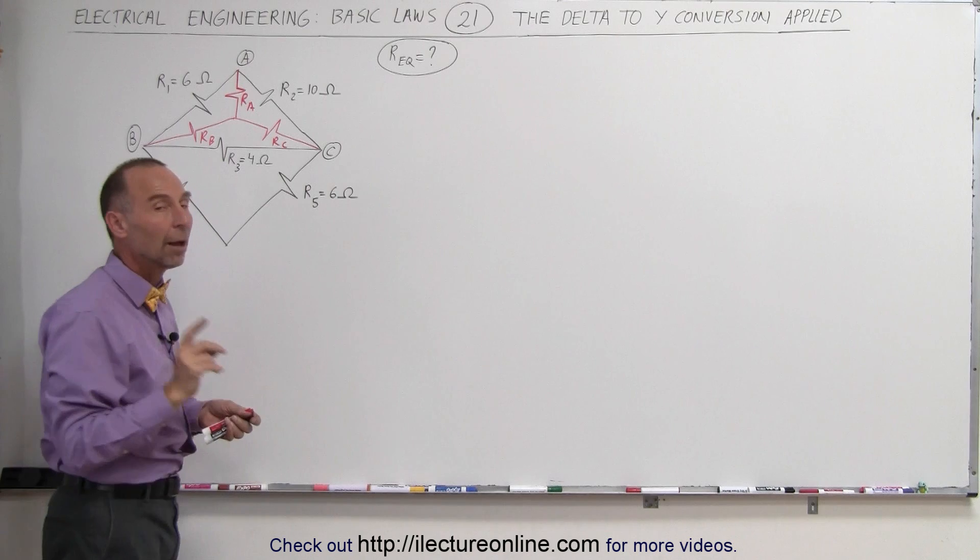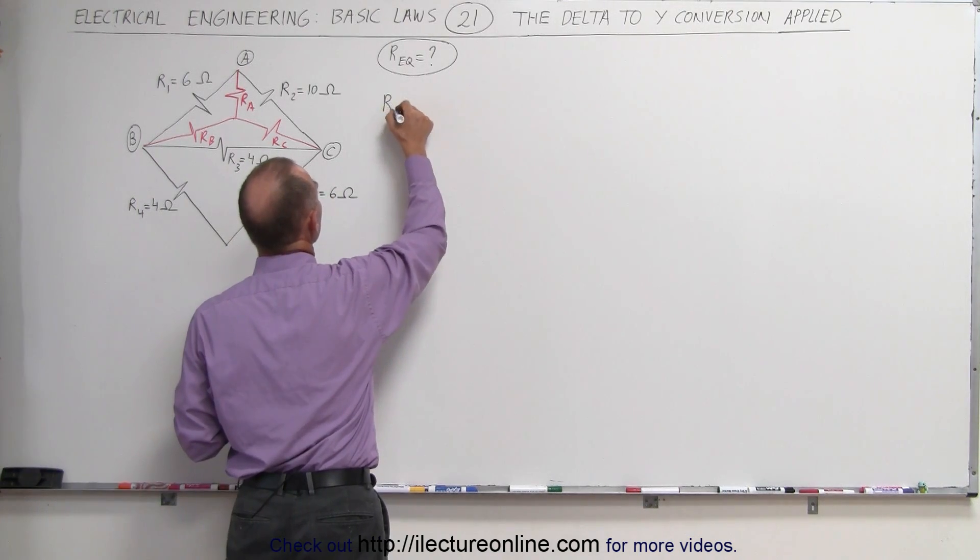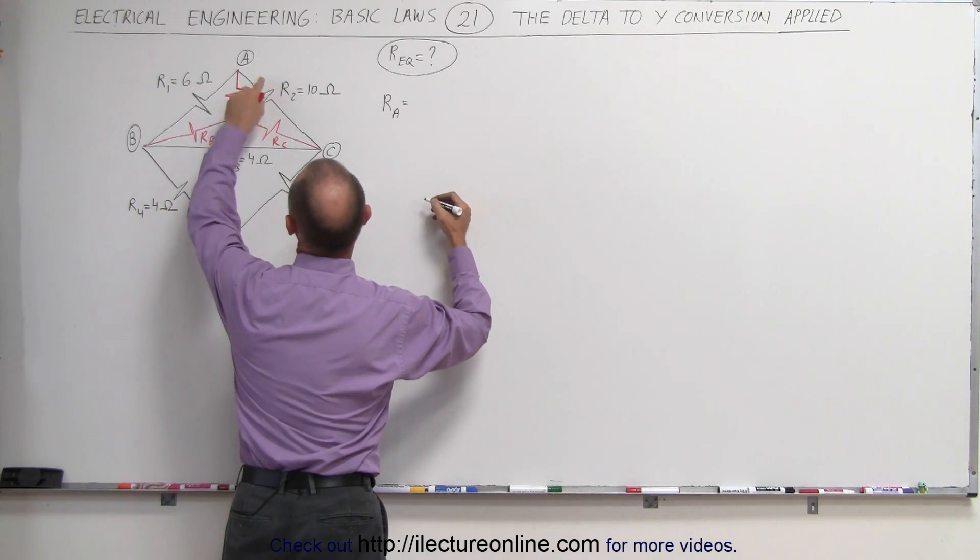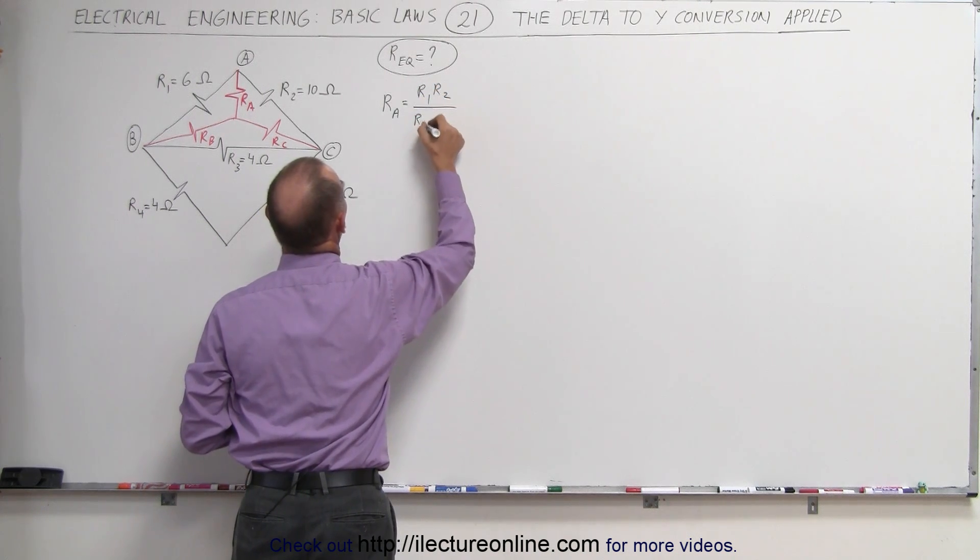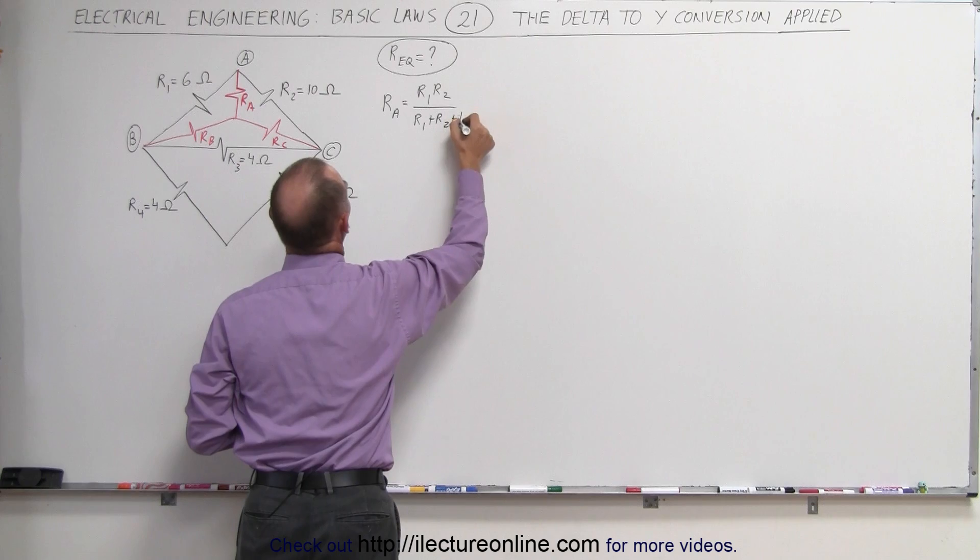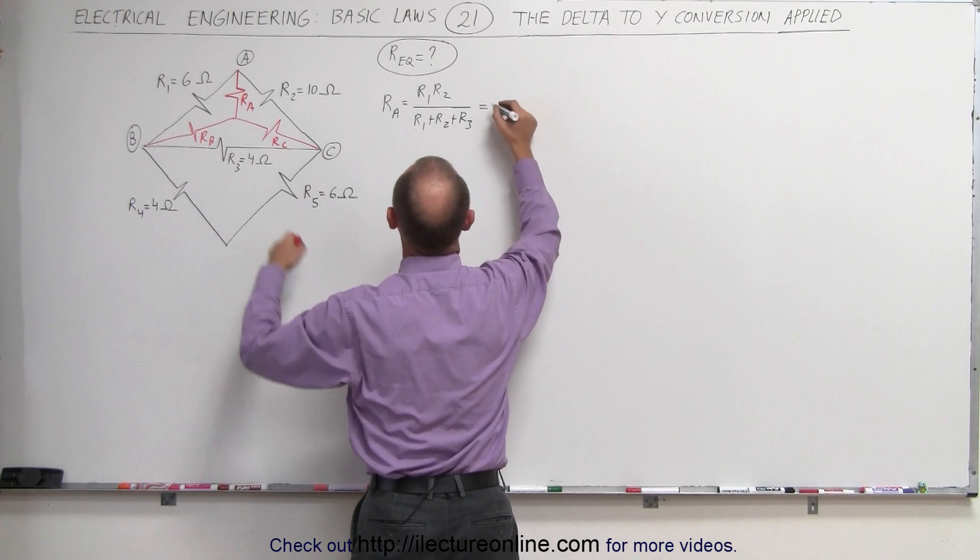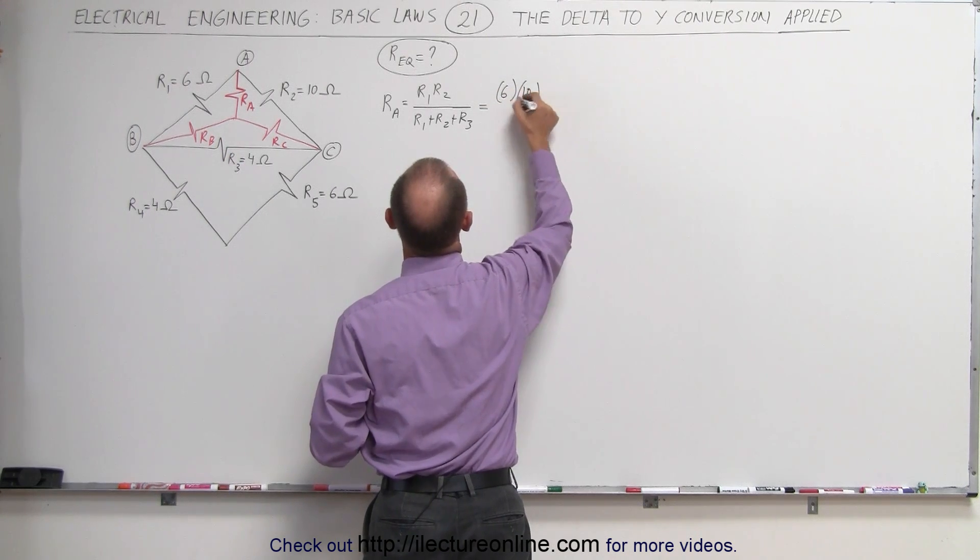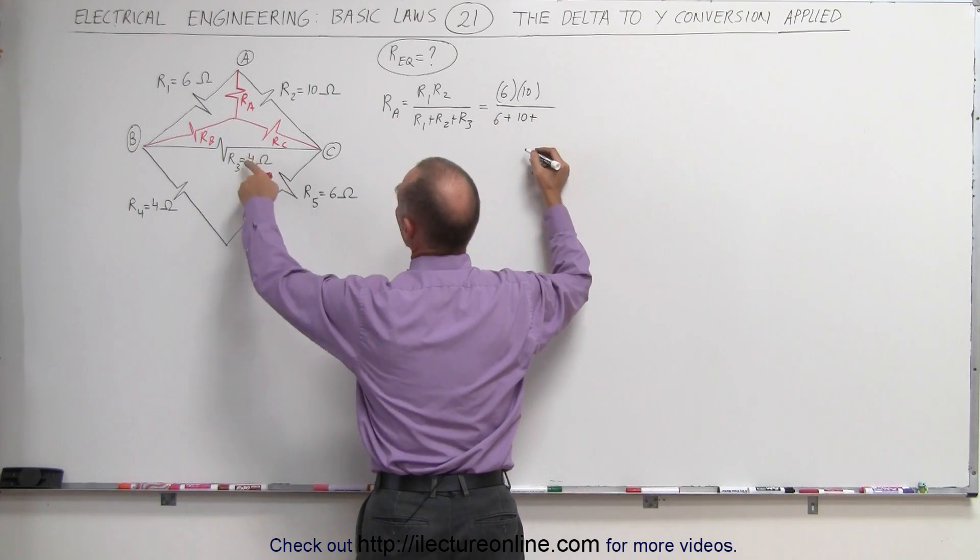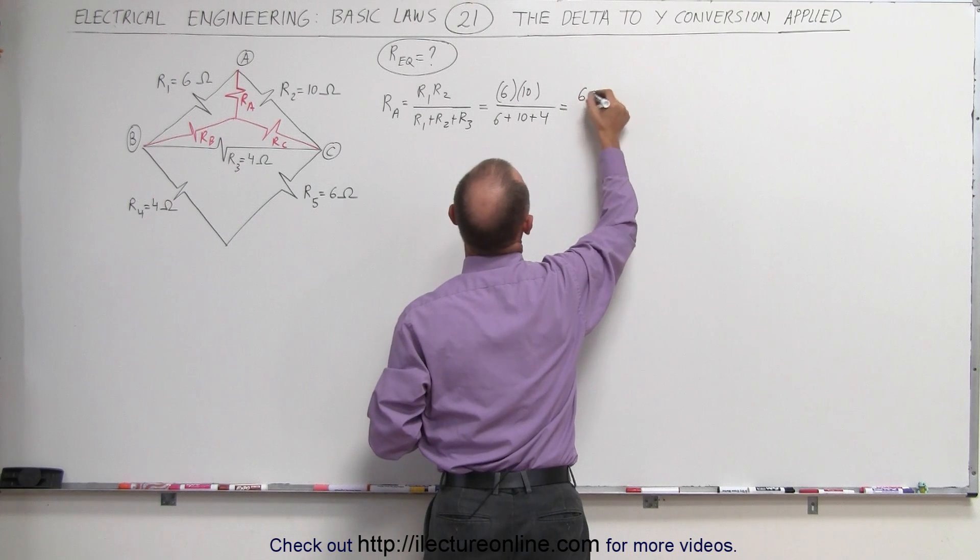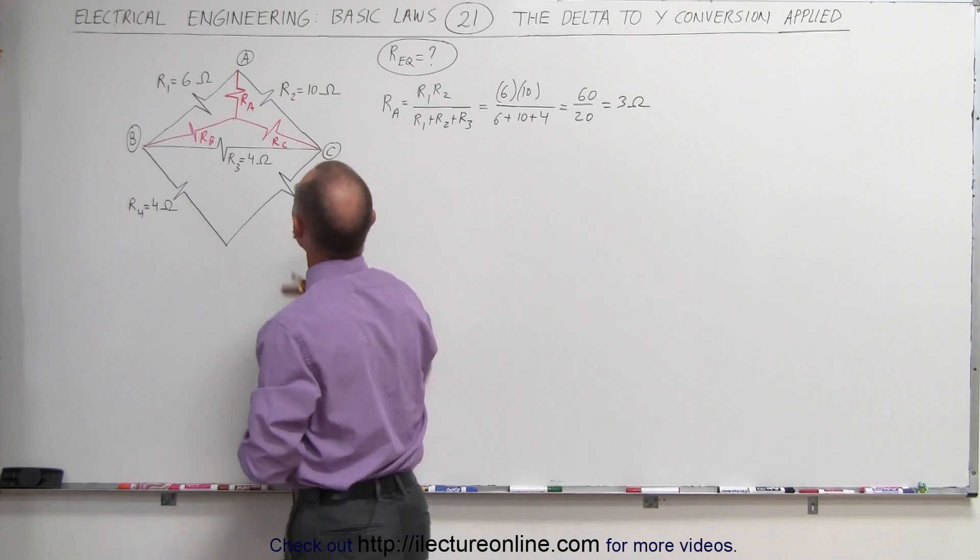Now I know how to write the conversion equations. I can now write that R sub A is equal to the product of the two resistors it's in between. That would be R1 and R2 divided by the sum R1 plus R2 plus R3, the sum of all three resistors. So in this case, that would be equal to R1 is 6 ohms, R2 is 10 ohms, and here we have 6 plus 10 plus R3, which is 4, that's equal to 60 divided by 20, which is equal to 3 ohms. So the equivalent resistance for RA, that's 3 ohms.